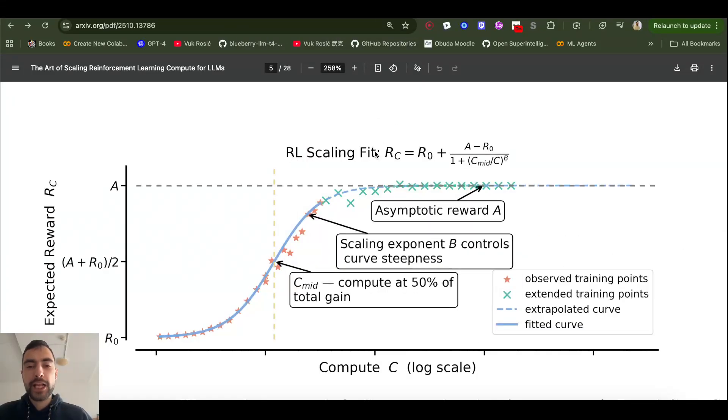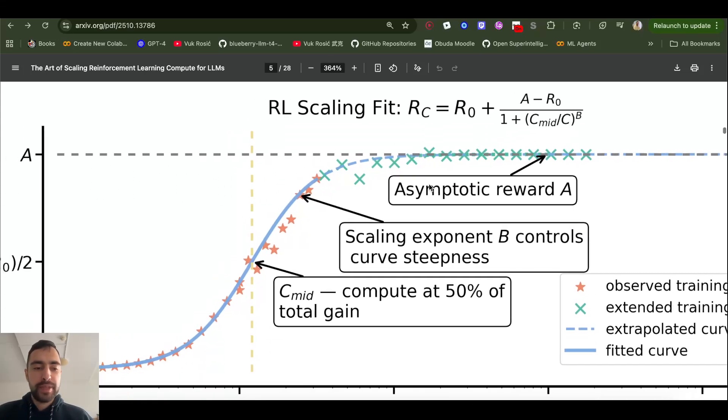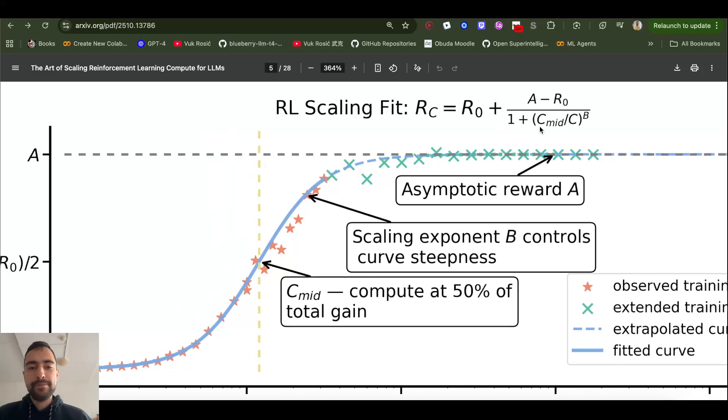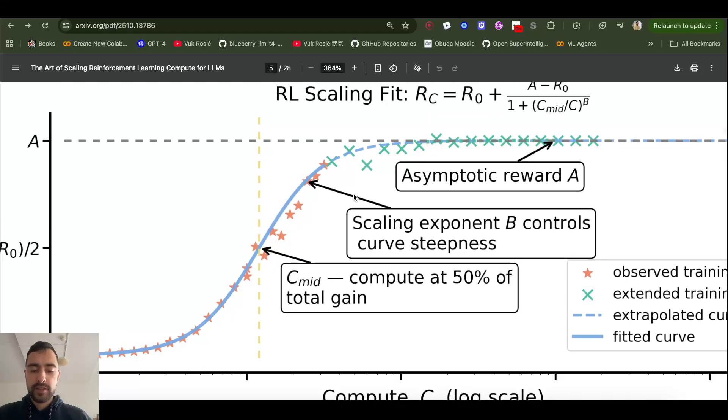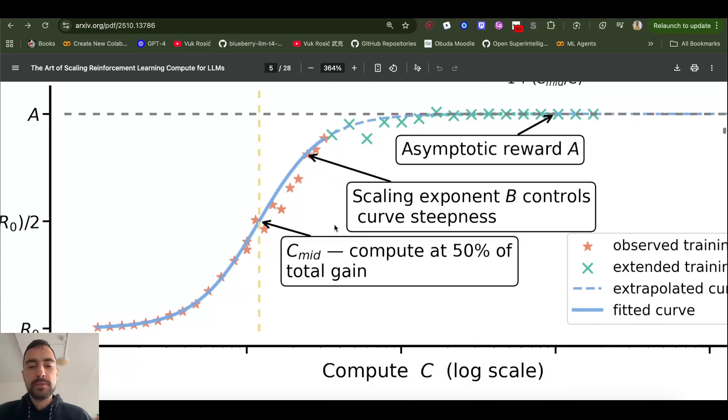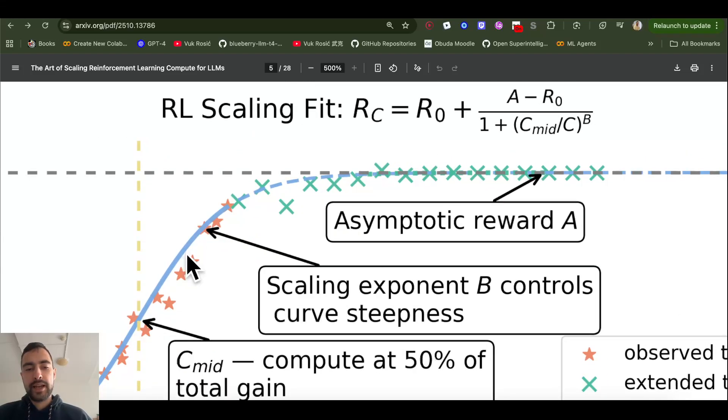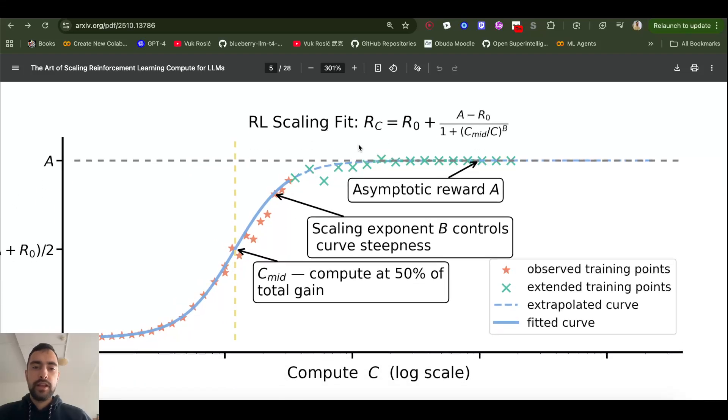The formula here, you can calculate your reward based on your compute. And it's actually very simple. So your reward is equal to R0, which is your beginning reward, starting how much AI gets reward without any training. And then A here is the maximum possible reward. So you see here R0 plus maximum possible minus beginning over one plus. C_mid is compute to reach this mid reward, middle amount of reward possible. So how many GPU hours? And C_total is total amount of hours you want to input. So this C, you can just put whatever amount of GPU hours you want to calculate the reward for. And B is steepness of this curve, which is like a number. So that's how you can get expected rewards based on your compute hours C that you want to put in. So you can just predict it.